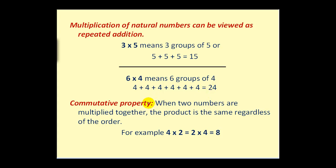The second idea is the commutative property. When two numbers are multiplied together, the product is the same regardless of the order. So for example, 4 times 2 is equal to 2 times 4, which is equal to 8.